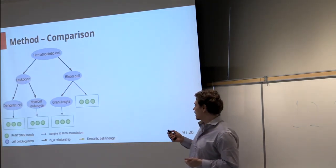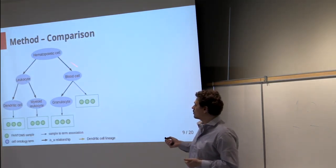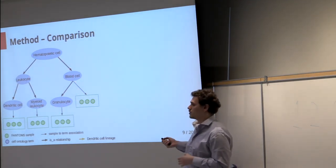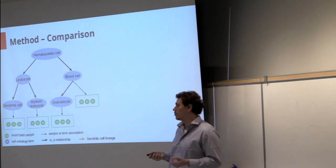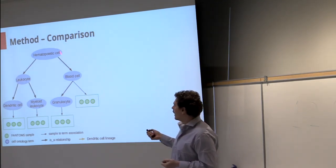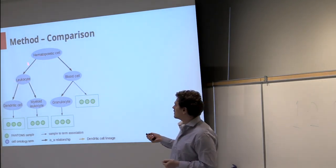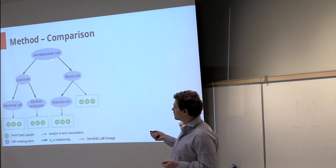What I'm showing here is an example of the cell ontology for the hematopoietic cell, which is responsible for the formation and development of blood cells, and the thick arrows represent the relationships between these cell types.